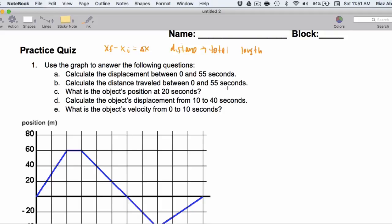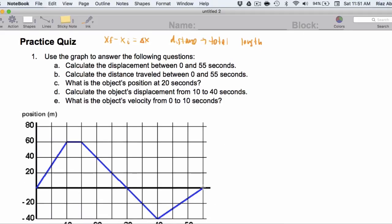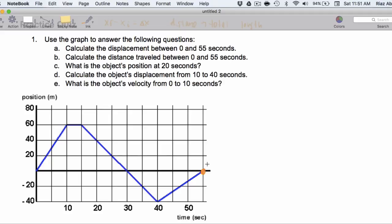So, the displacement between 0 and 55 seconds, well, at 55 seconds, we're here at 0. And at 0 seconds, we're at 0 as well. So, 1a is a very disappointing problem. What we're going to find is that x final minus x initial is simply 0 minus 0, which is, well, we ended up going nowhere.